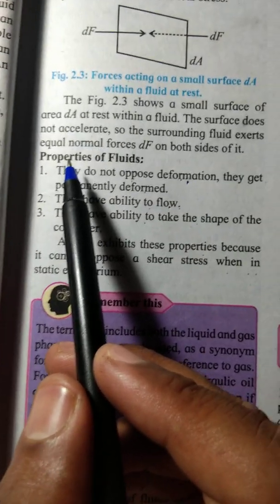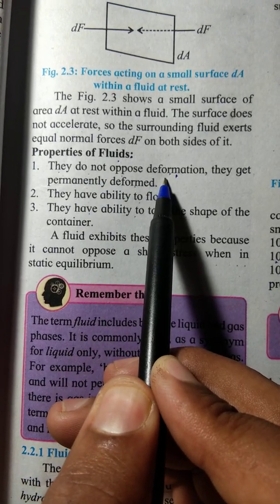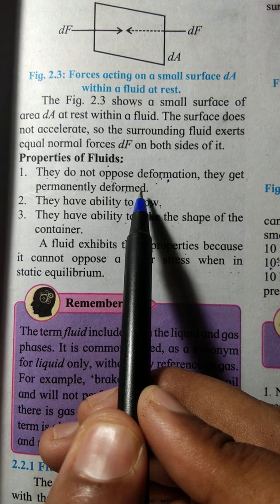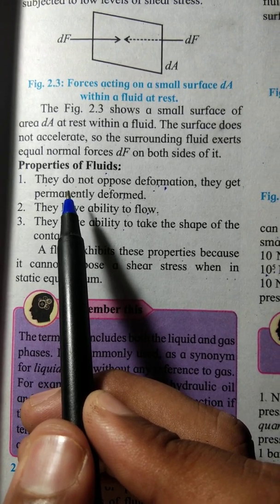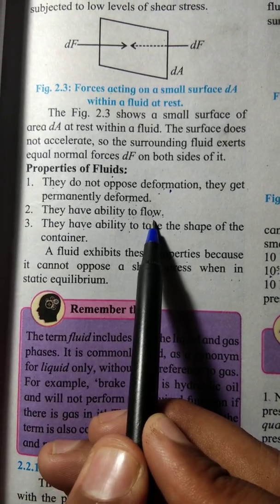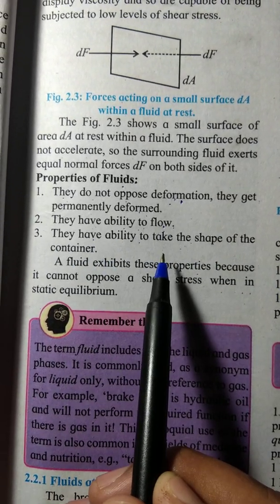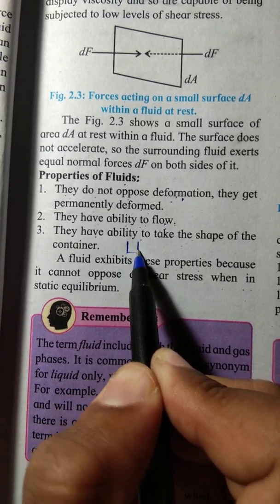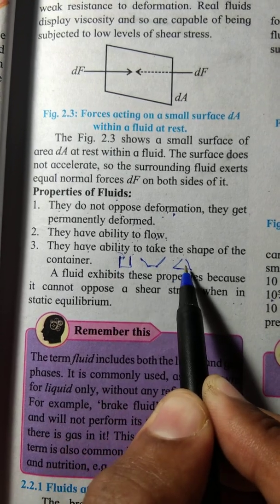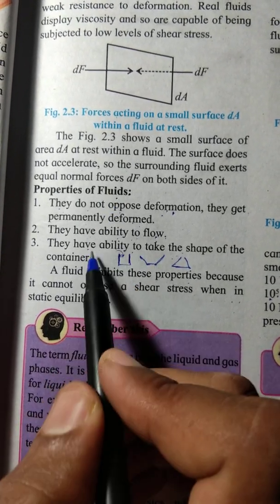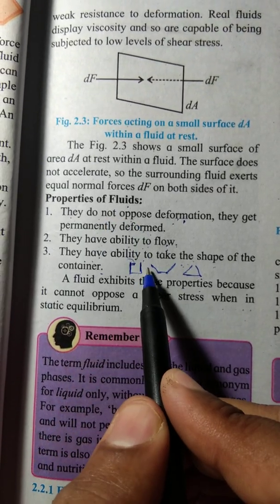When we have properties of ideal fluid versus properties of real fluid, first point: they do not oppose deformation, they get permanently deformed. Once the force is applied on the fluid, it does not regain its shape. Second, they have the ability to flow. And third, they have the ability to take the shape of any container. If it is liquid in a glass, it will take the same shape.